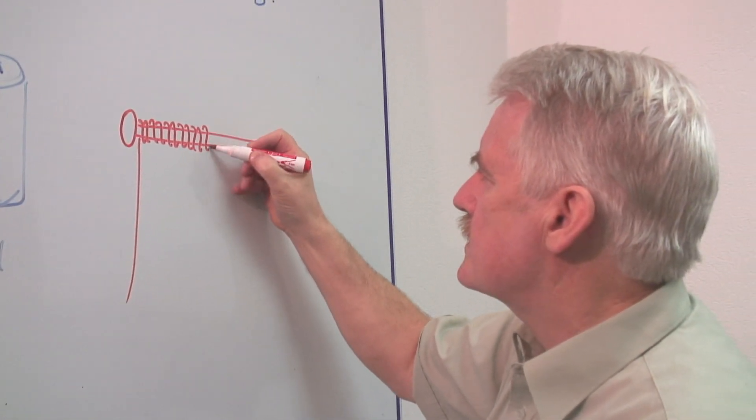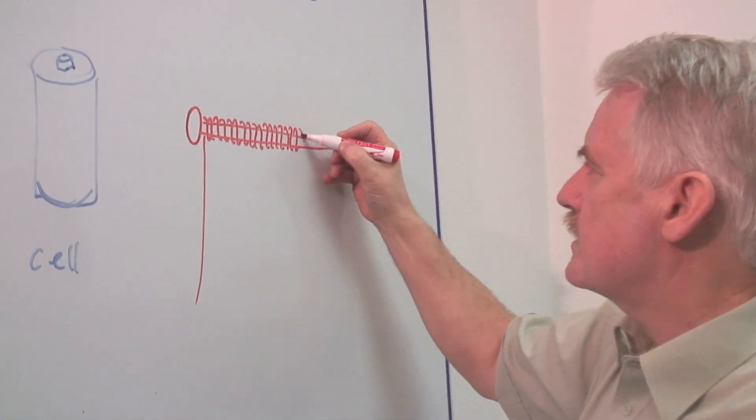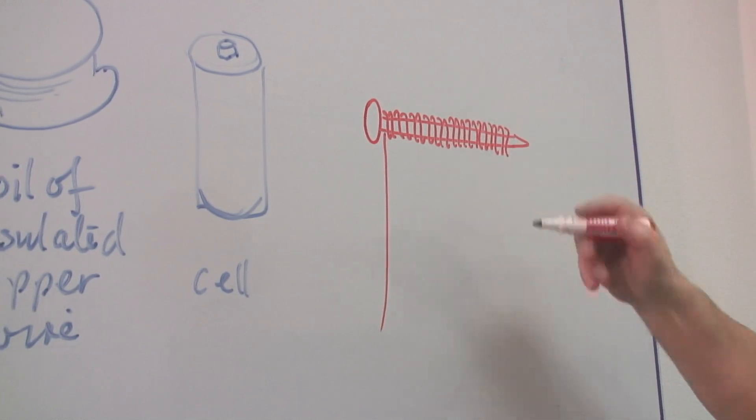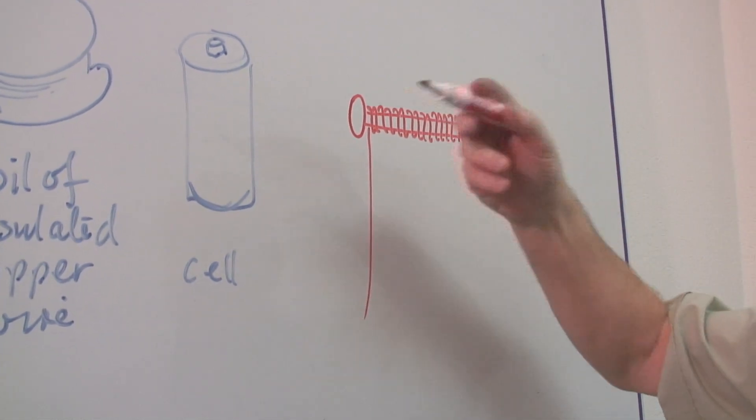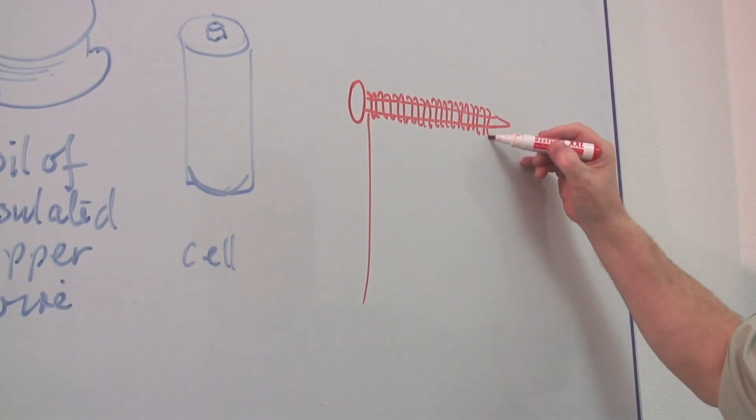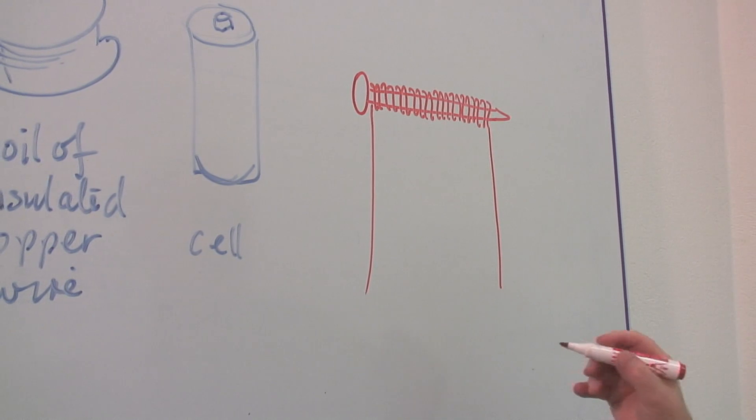Keep going always the same way round. It's got to be always the same way. And if you get to the end, it doesn't matter. Just keep wrapping it again, back round the nail, and keep going backwards and forwards until you've got a nice, large number of turns on that wire.